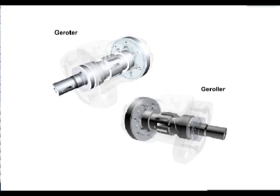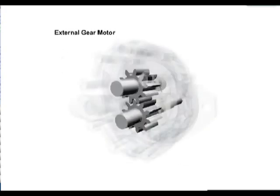These motors are used in many mobile applications where size, costs, and weight are factors. The external gear motor is designed as an external gear pump. These motors are used in many high-speed, low-torque applications, are fixed displacement, and can be bi-directional.